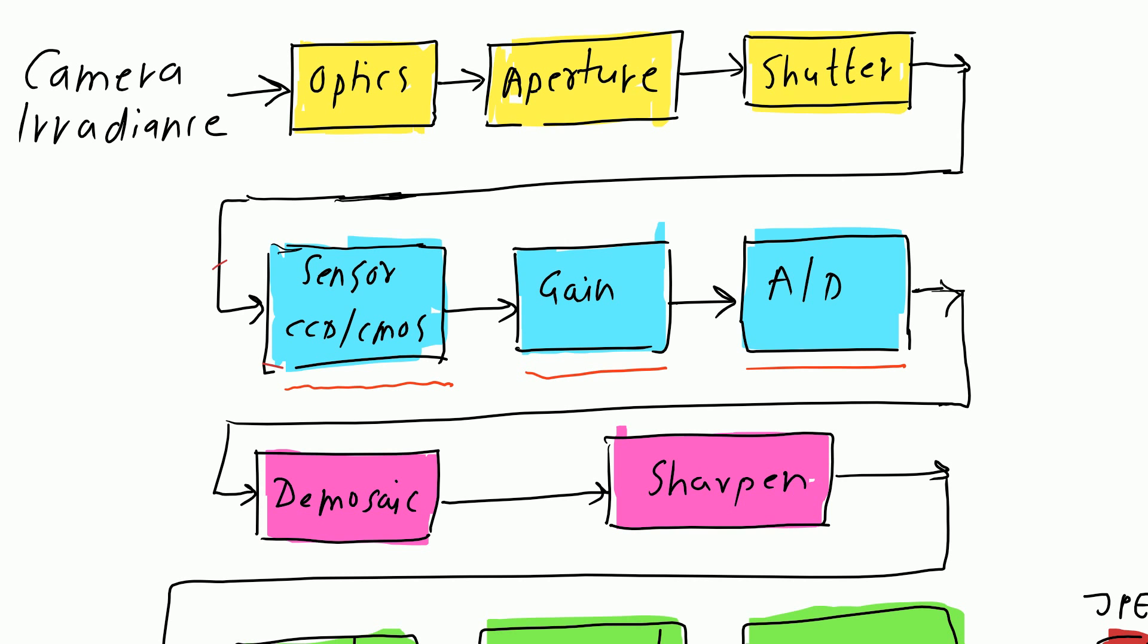Before A to D conversion, sensed signal is usually boosted by a sense amplifier. In video cameras, gain on these amplifiers was traditionally controlled by AGC which would adjust gain value to get good overall exposure. In new digital cameras, gain adjustment is carried out through ISO setting. We have the ISO setting related with the gain in the new digital cameras.